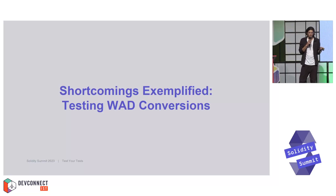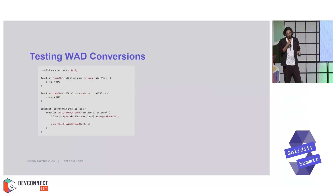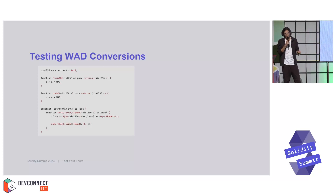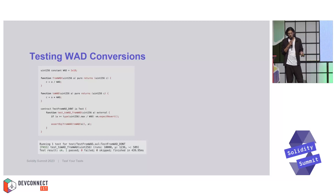Here, for example, we're testing wad conversions — we have two functions that convert to and from wad units, simply multiplying and dividing by the wad constant. We test this by making a round trip, calling to and from, and expecting to end up with the same outcome. We include a check for overflow, and if we pass this threshold we expect to catch this overflow case. We use Foundry and run it with 10,000 runs and get a passing result. Does this convince you?